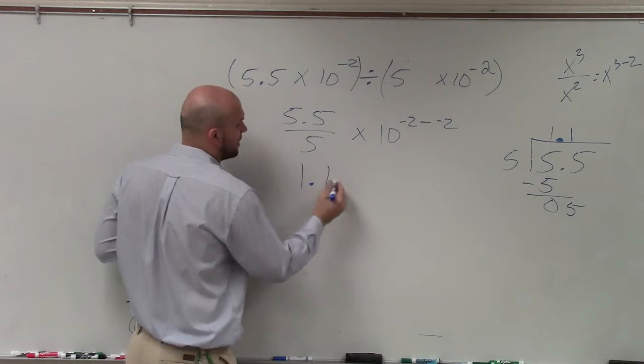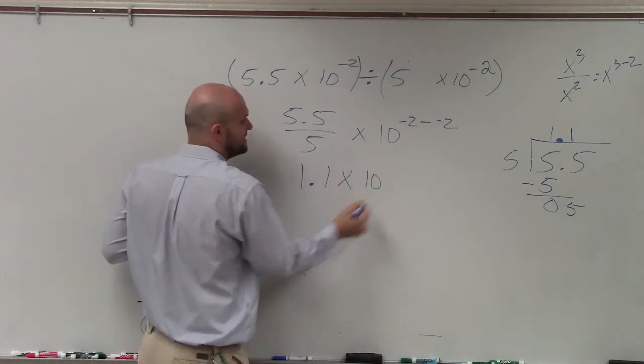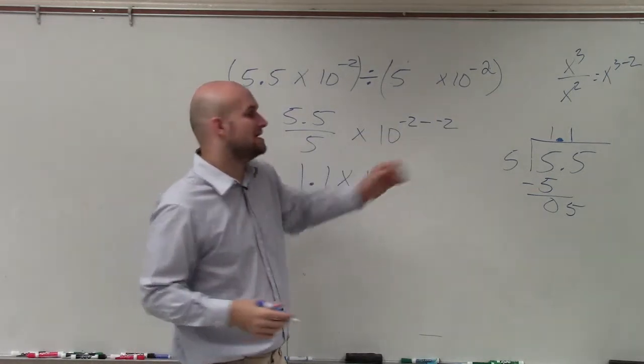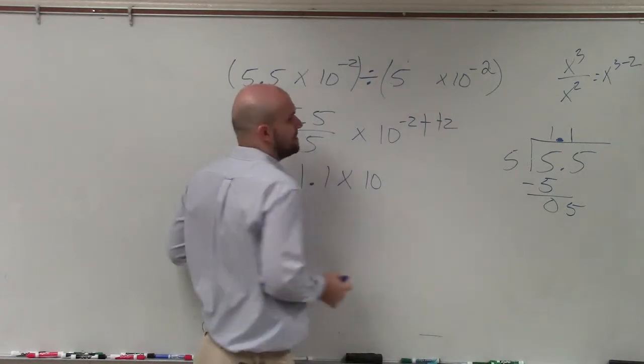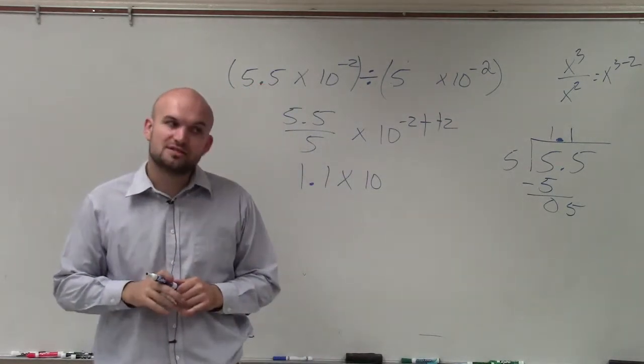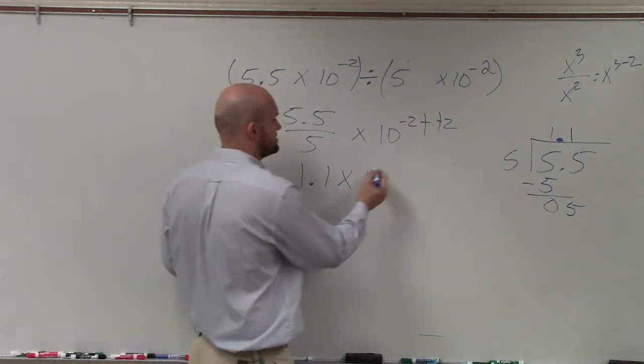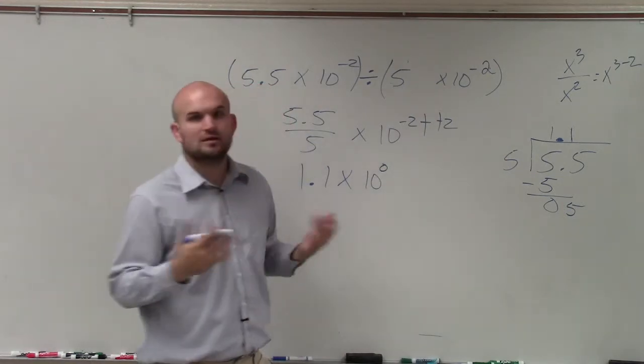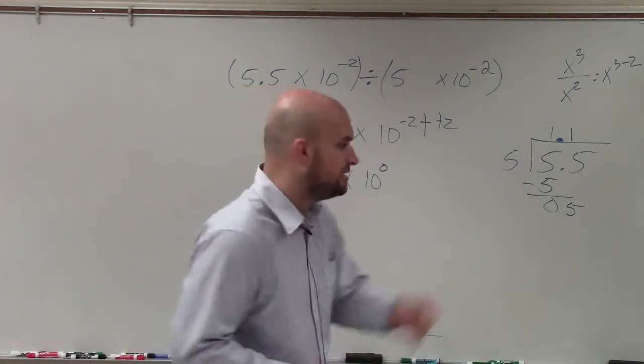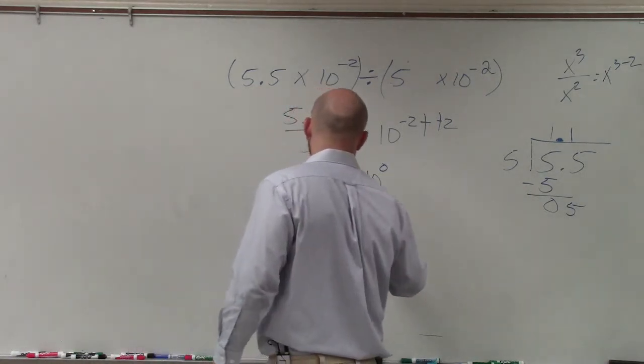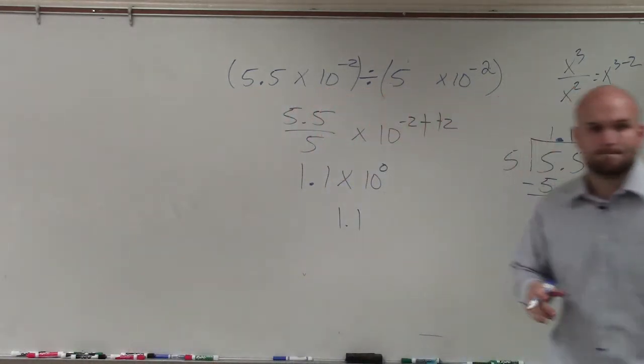I have 1.1 times 10 to the. When you have minus a negative, that becomes a positive. So it's negative 2 plus 2, which ends up going to give us 0. Now, obviously, 10 to the 0 power is just going to be 1. So your finalized answer would be 1.1. OK? Thank you.